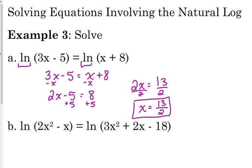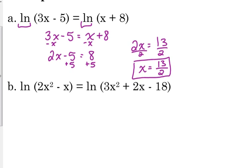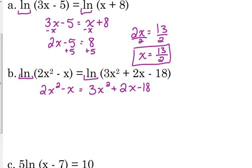Same thing with the second example here. We've got the natural log of 2x squared minus x is equal to the natural log of 3x squared plus 2x minus 18. When you have the same log on both sides, you just set what's inside the logarithms equal to each other. Now, this one is a quadratic equation. So quadratic equation, it's got to be equal to 0. I want to move everything to the side where the x squared is bigger, so I'm going to move it to the right side by subtracting 2x squared and adding x.